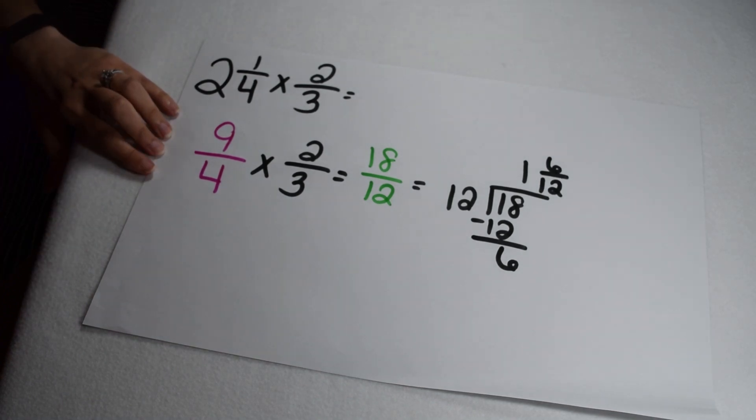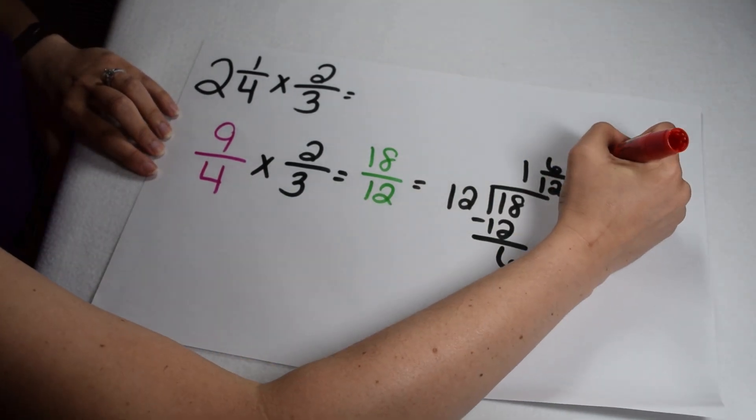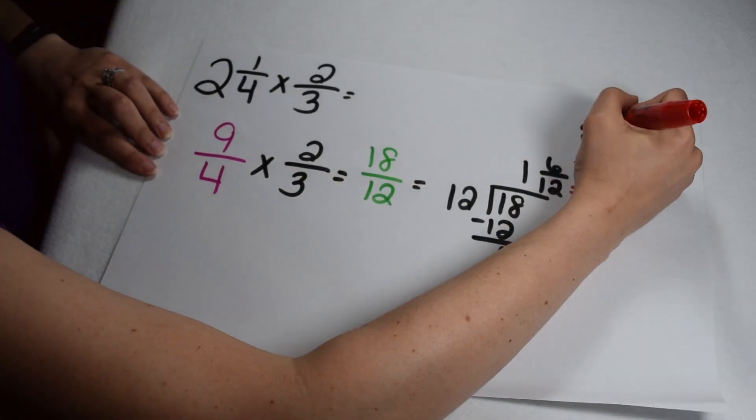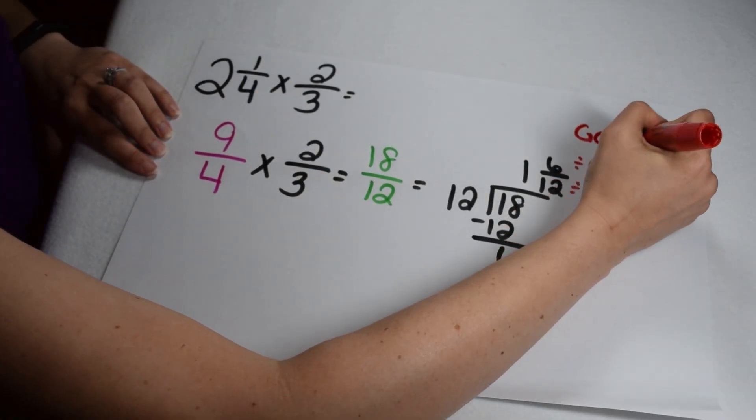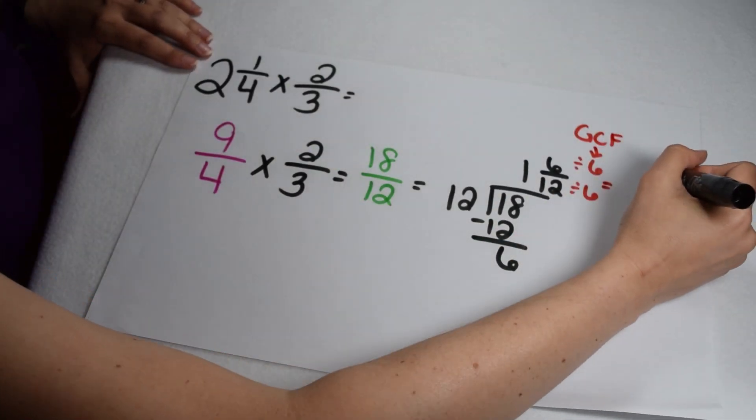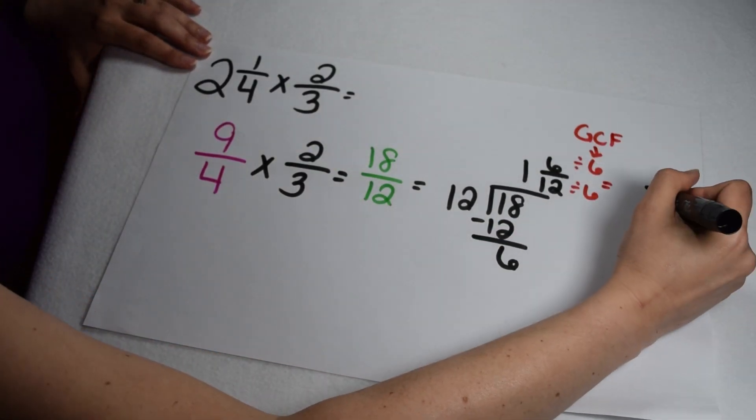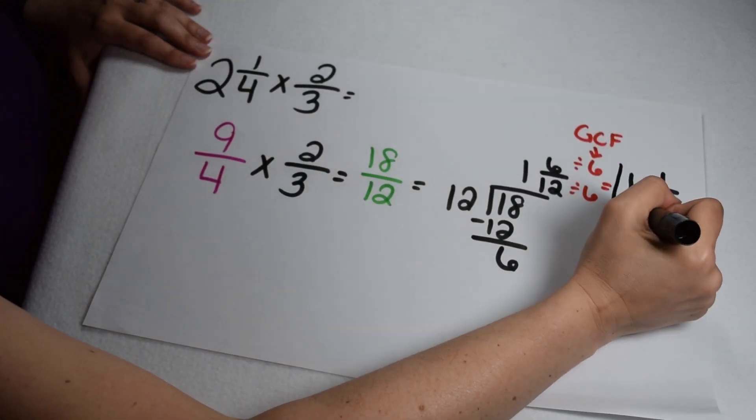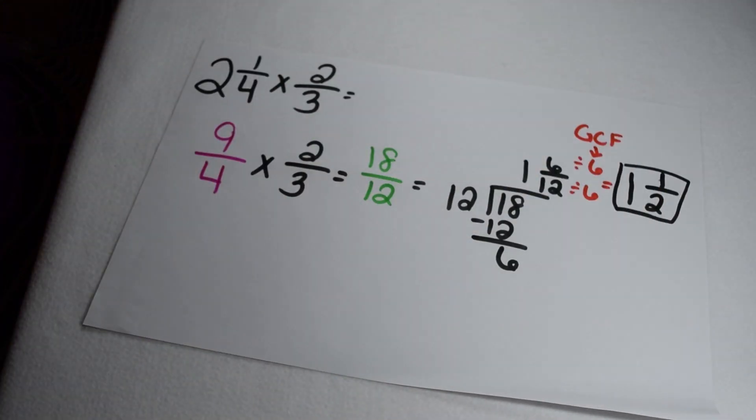One and six twelfths isn't quite finished though because six and 12 have several common factors. Their greatest common factor is six. So I'm going to divide both six and 12 by six because that's their greatest common factor. Six divided by six gives me one. 12 divided by six gives me two. And I still have my whole number of one. So my final answer is going to be one and one-half.